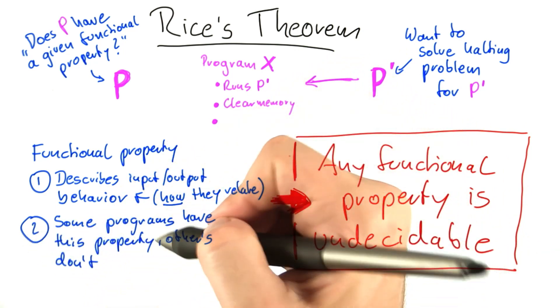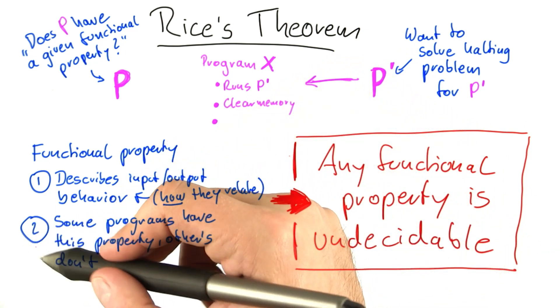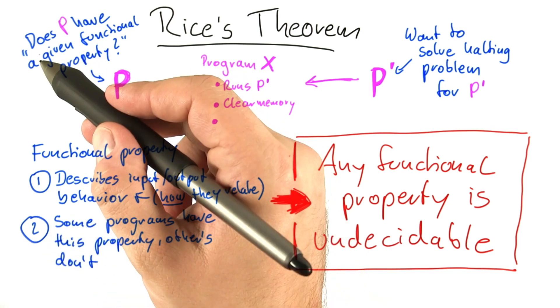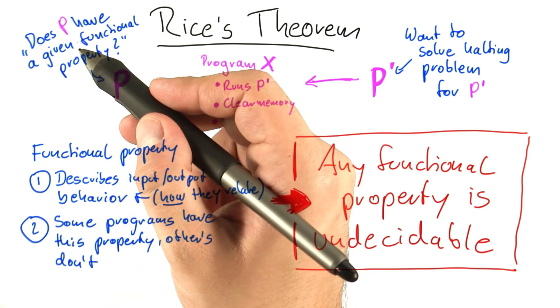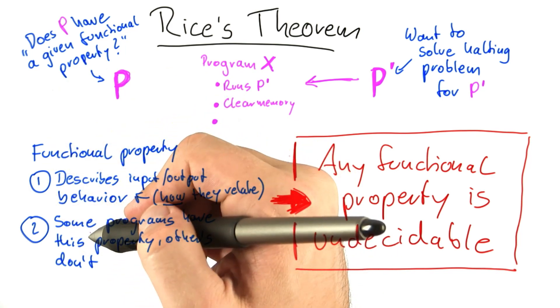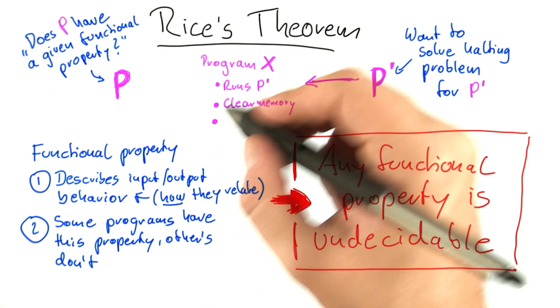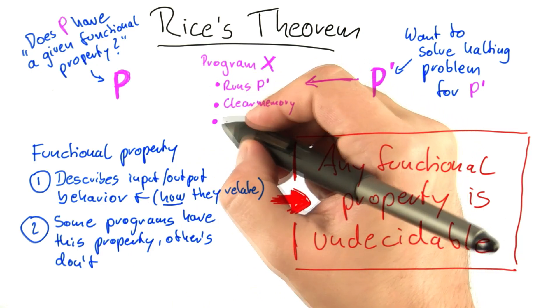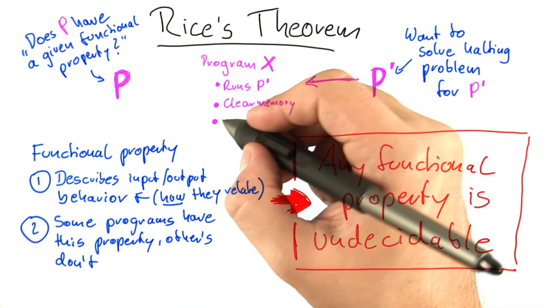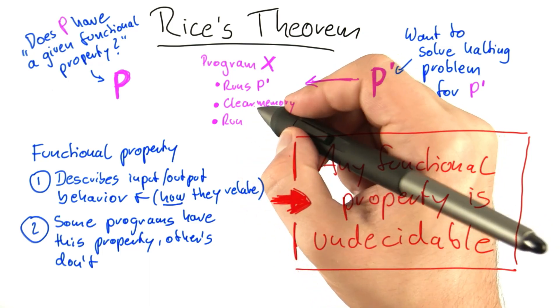And this is the only reason why we need this condition here for a functional property. Because if we have an algorithm that can decide a functional property, this means that there are some programs that have this property, and others that don't. So we will now add to our program x a program that has this functional property. So run program with functional property.